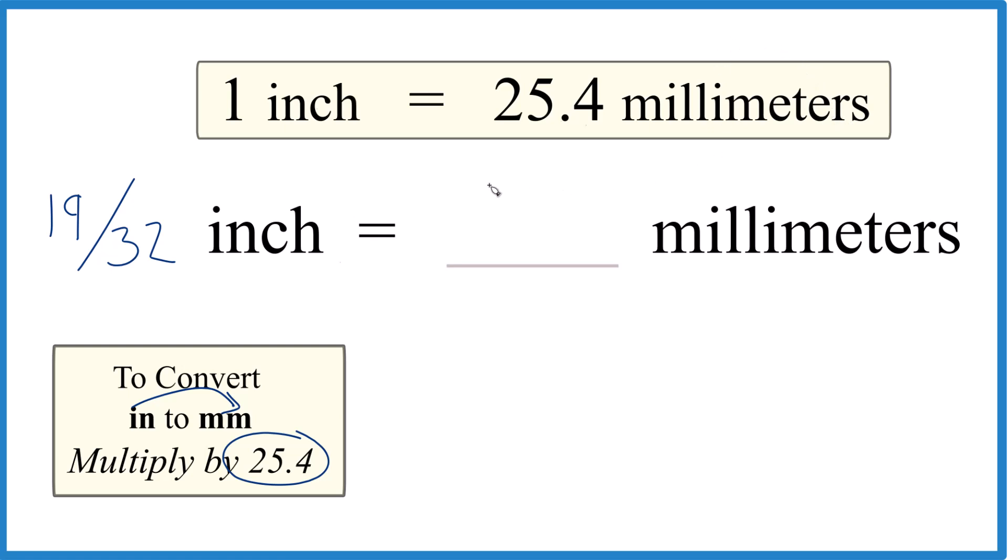A few ways you could do this. You could take 19 times 25.4 and then get that number and divide by 32. That'd give you a pretty precise answer.